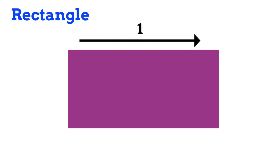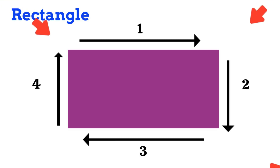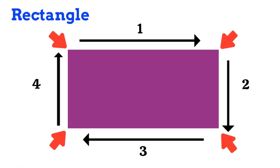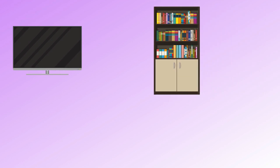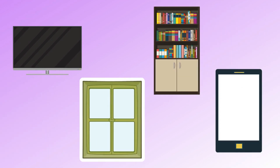Next shape is rectangle. Rectangle has 4 sides: 1, 2, 3, 4 — and 4 corners. Rectangle has 2 long sides and 2 short sides. Our TV, bookshelf, window, mobile phone are all rectangle shape. Now turn. We can see two rectangle shape objects.